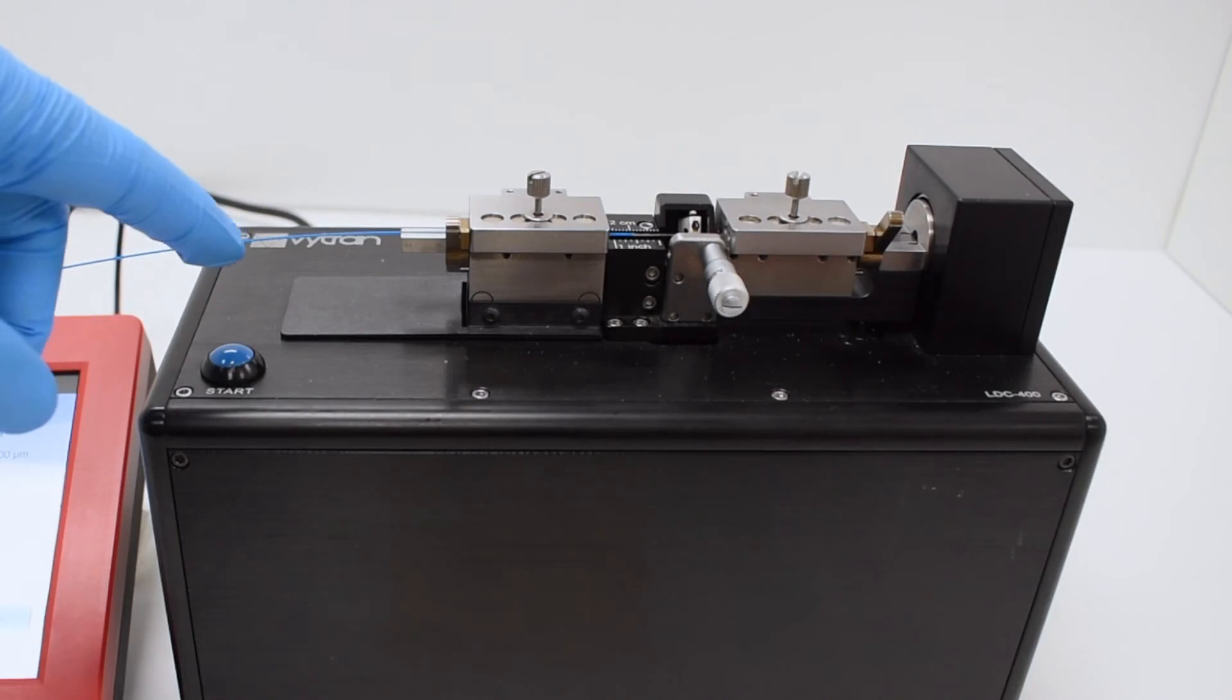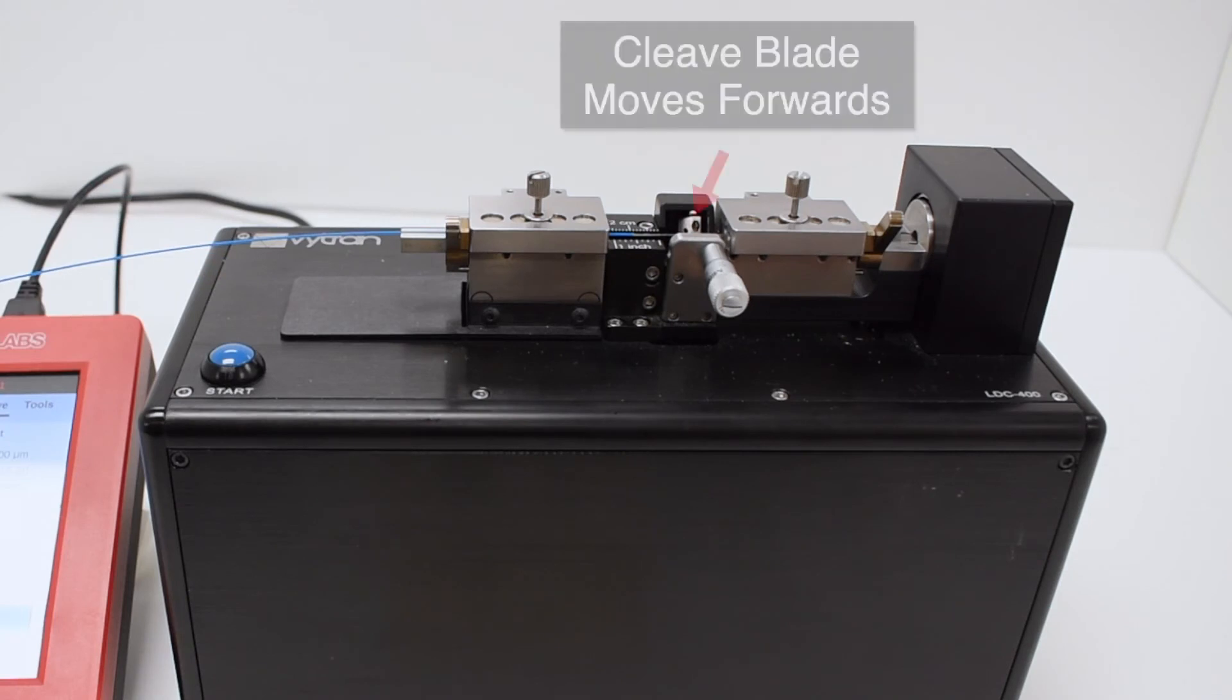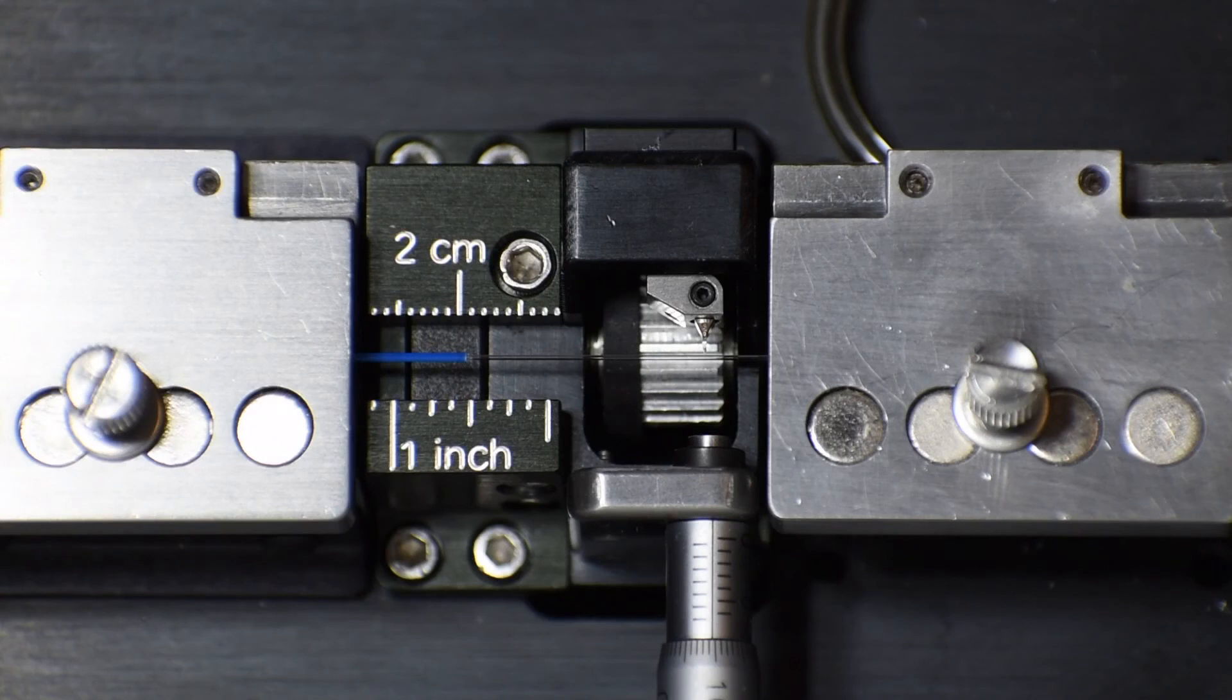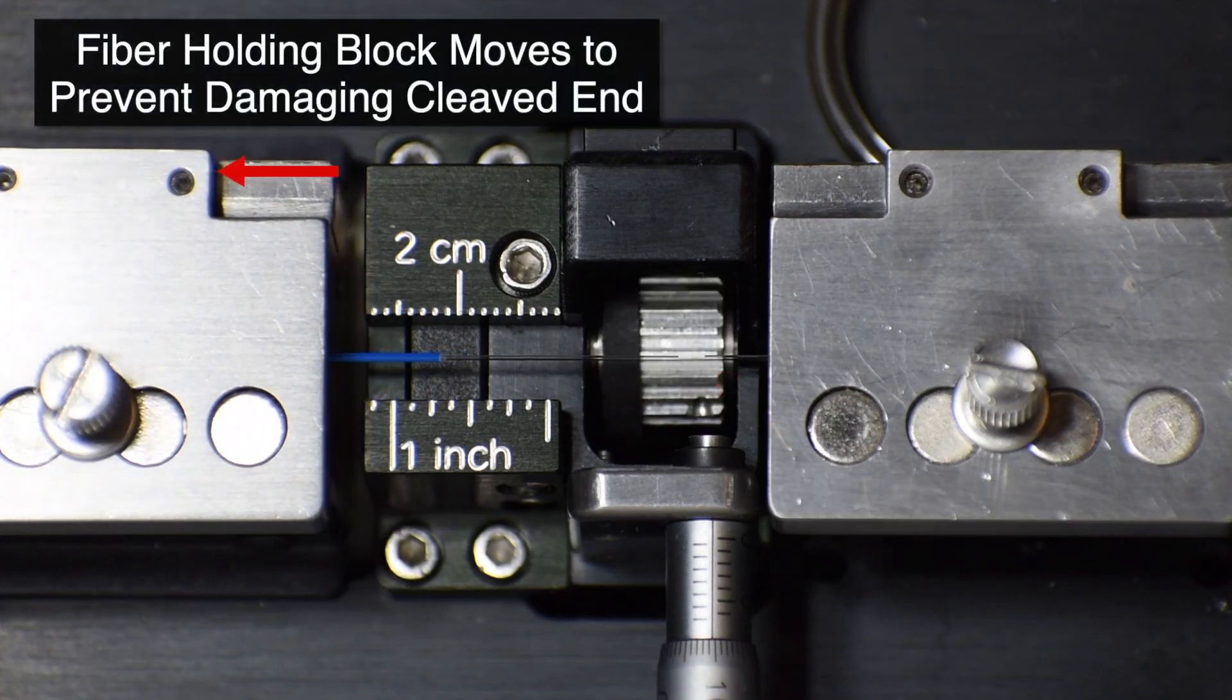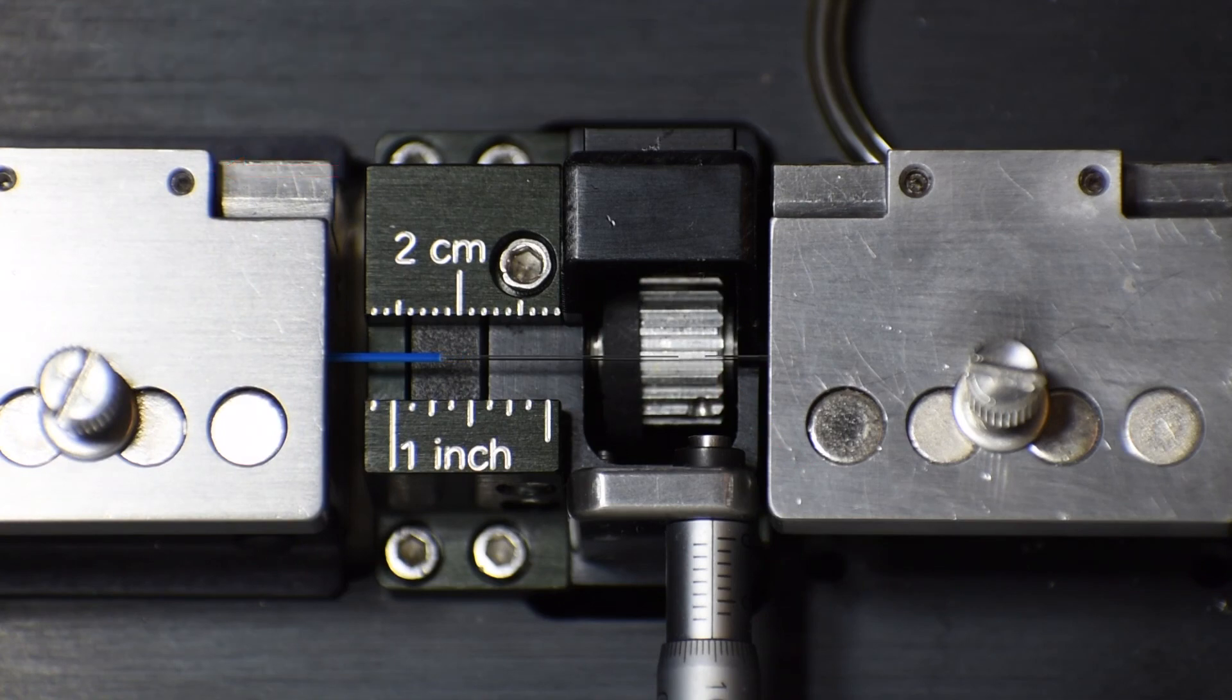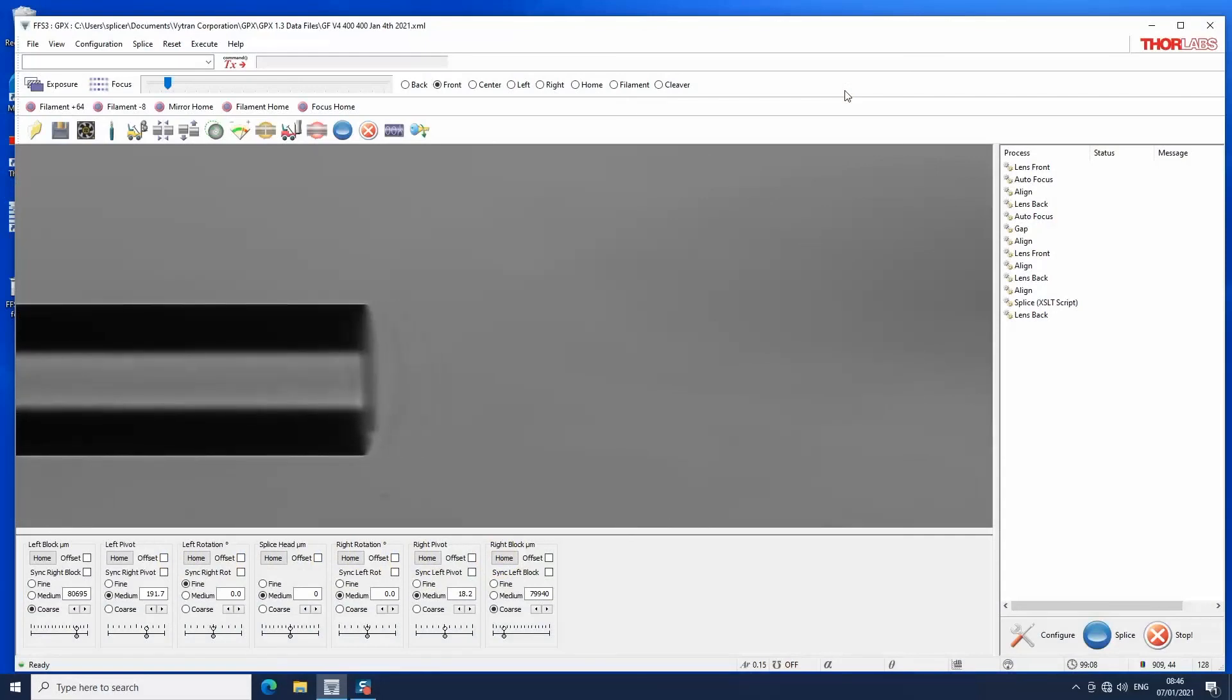Press the start button again to activate the cleave. The left fiber holding block will slowly move left, applying tension to the fiber. Next, the cleave blade will advance to its pre-cleave position. It should not strike the fiber during this move. Then the blade will oscillate to advance forward. When the blade strikes the fiber, it will create a scribe mark, which will propagate across the diameter of the fiber, forming a flat cleave. The fiber will then be ready to be used in a splicer or glass processor.